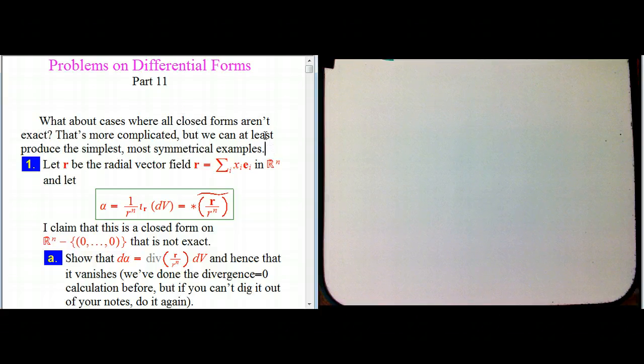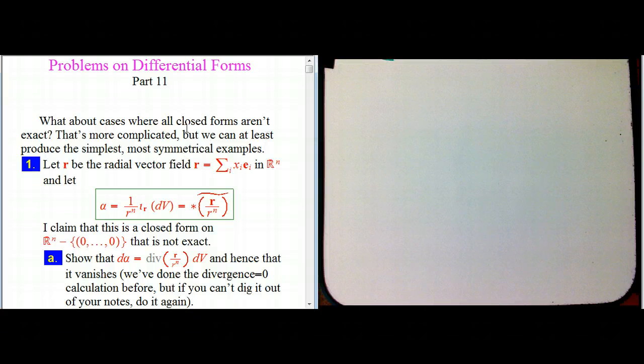What about cases where that's not true? That's the start of what's called de Rham theory, where you look at exactly how the topology of a space influences this question: how many closed forms are there that aren't exact? I just wanted to introduce you to basically the natural generalizations of the examples that were in those topology handouts, originally developed using vector fields, and then showing how they translate nicely into differential forms.